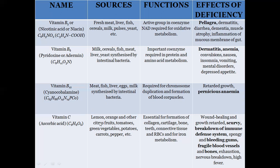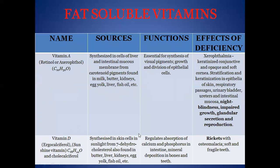Vitamin C, ascorbic acid, is sourced from lemon, orange, and other citrus foods. Its function is that it is essential for the formation of cartilage, bones, teeth, connective tissues, red blood cells, and for iron metabolism. Its deficiency disease is scurvy, and it also causes a breakdown of the immune defense system, bleeding gums, fragile blood vessels, and nervous breakdown.